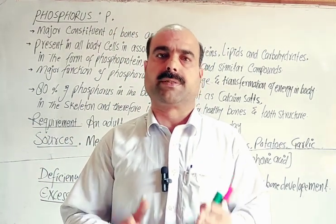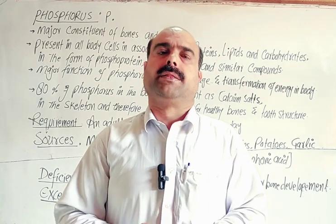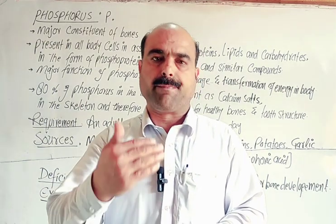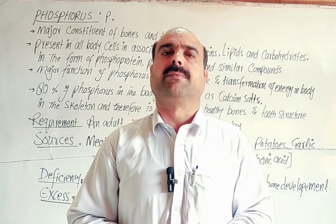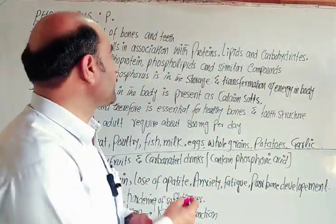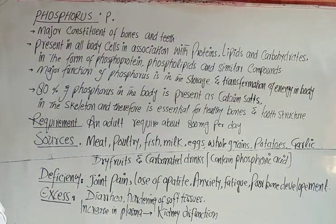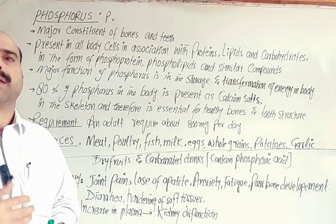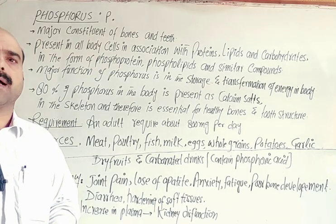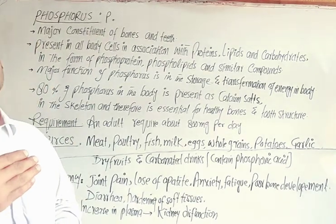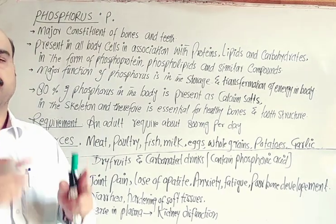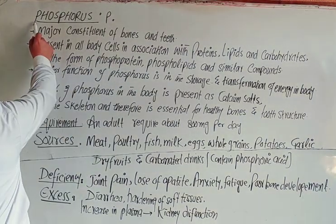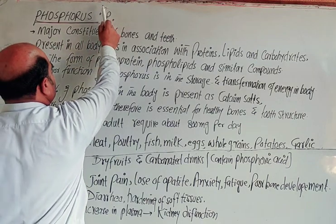I am going to discuss a new topic: the importance of phosphorus in human bodies. The role of phosphorus in the human body is today's topic. The source of daily requirements for a human adult, and the level of concentration of phosphorus in the body, will be discussed. Phosphorus is represented by the symbol P.